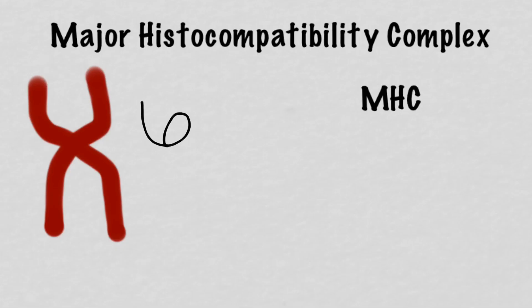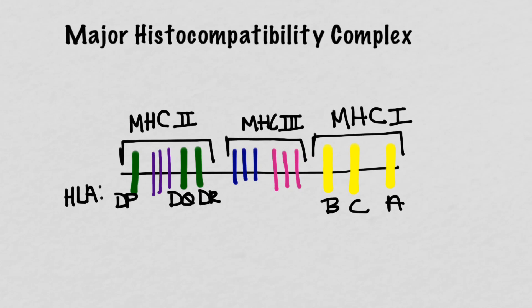The major histocompatibility complex, or MHC, refers to a group of tightly linked genes encoded on chromosome 6 in humans. They are called histocompatibility because they were initially identified as molecules involved in transplant rejection. But they didn't evolve to give transplant surgeons and immunologists headaches — they evolved so that T-cells could recognize and react to antigens inside your cells. Thus, antibodies protect us from things outside our cells, and T-cells handle things that have gotten in.